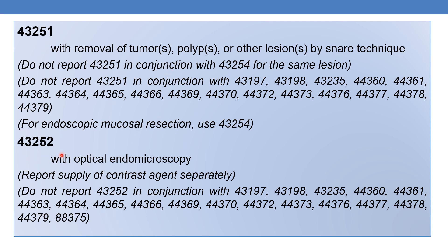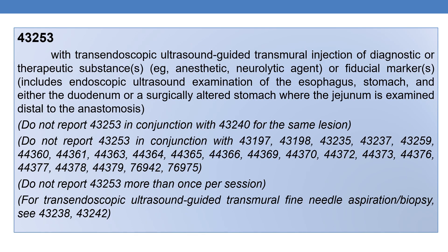The next is 43252: esophagogastroduodenoscopy, flexible, transoral, with optical endomicroscopy. Report the supply of contrast agent separately. The next CPT is 43253: esophagogastroduodenoscopy, flexible, transoral, with transendoscopic ultrasound-guided transmural injection of diagnostic or therapeutic substance — for example, anesthetic agent, neurolytic agent, or fiducial marker. It includes endoscopic ultrasound examination of the esophagus, stomach, and either the duodenum or a surgically altered stomach where the jejunum is examined distal to the anastomosis. 43253 must not be reported more than once per session.